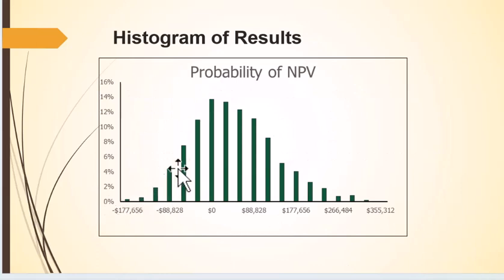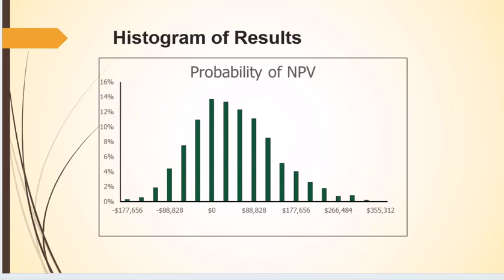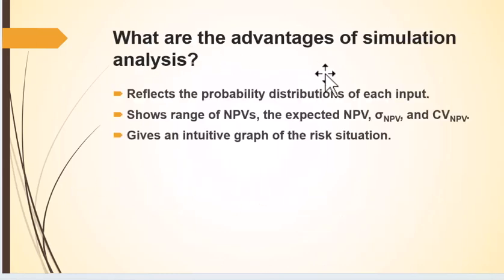Here's what the graph looks like. Looking at the net present value distribution, the negative values are on one side and the positive values on the other. It seems like there's a better chance of positive than negative, but pictures don't give us enough detail. The simulation graph gives us a picture of the risk situation of this particular project.